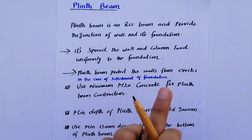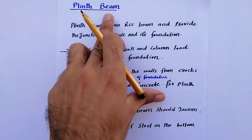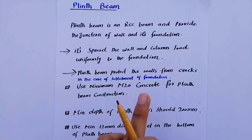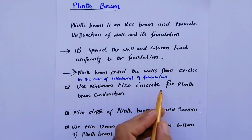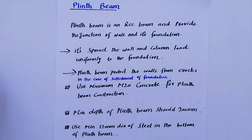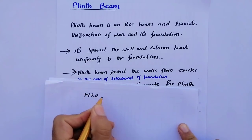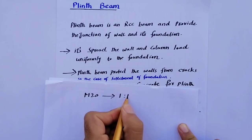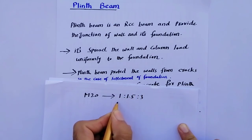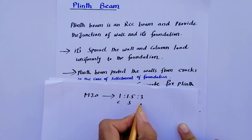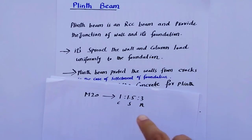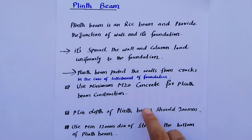Here are some useful tips for design of RCC plinth beam. First, use minimum M20 grade concrete for plinth beam construction. M20 grade means a mix ratio of 1:1.5:3 — one part cement, one and a half parts sand, and three parts coarse aggregate. Use minimum M20 grade concrete for plinth beam construction.